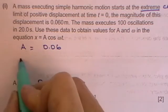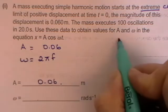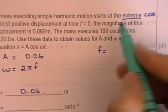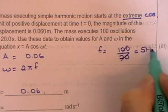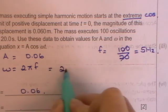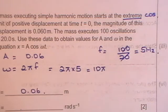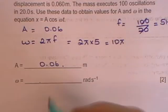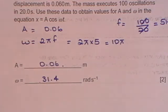The mass executes 100 oscillations in 20 seconds. Use these data to obtain values for A and omega in the equation X is equal to A cos omega t. Then omega is 2 pi f, but f is equal to, you're told, 100 oscillations in 20 seconds. So f is equal to 5 hertz. And therefore omega is 2 pi times 5, which gives you 10 pi. And they will accept that as an answer, or if you multiply that out, you get 31.4 radians seconds to the minus 1.